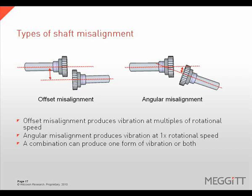Angular misalignment will commonly produce a vibration response at 1x rotational speed, with the axial direction often being the highest in amplitude. While this is often the case, it is not always true. Depending on the coupling type employed, the vibration response may vary from one machine to the next.